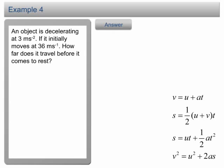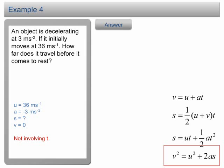The initial velocity is 36 m per second. The acceleration is negative 3 m per second squared. We are asked to find the distance traveled when the final velocity becomes zero. Time t is absent in the list. Therefore, we can use the equation v squared equals u squared plus 2as.